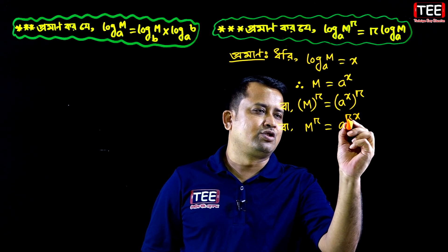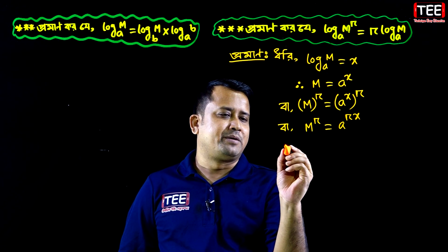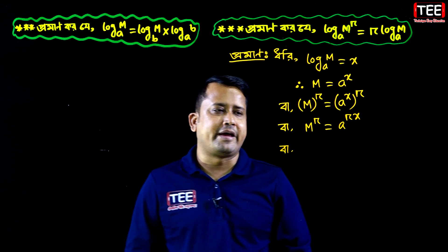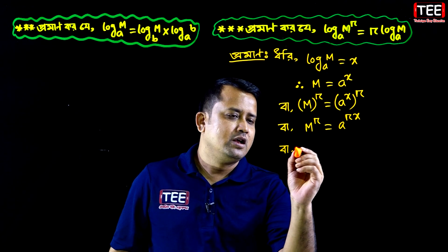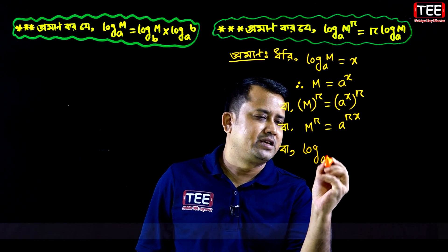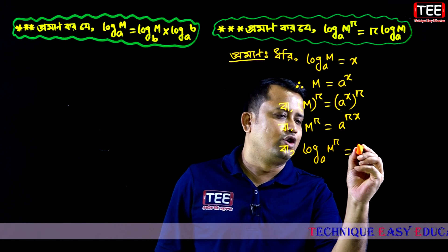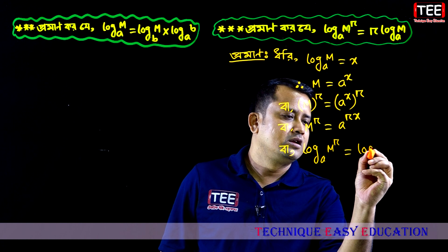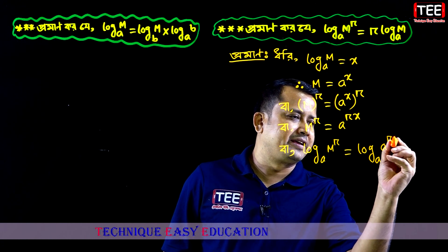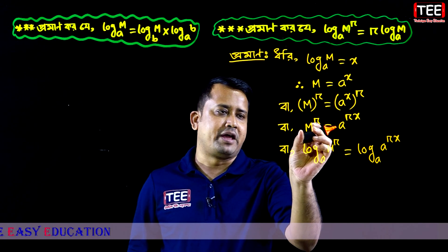Look — r times x gives us rx. Now taking log base a of both sides: log base a of m to the power r equals log base a of a to the power rx.